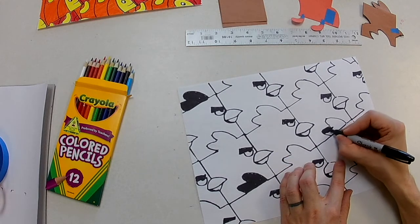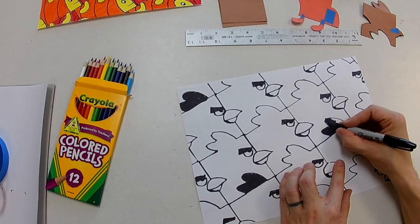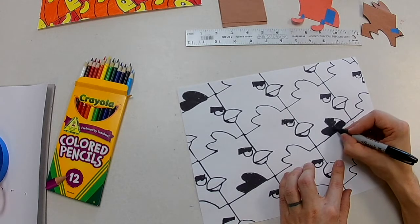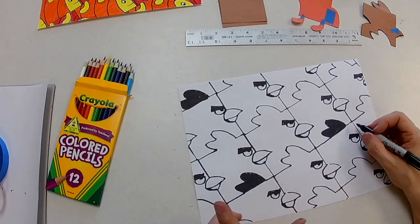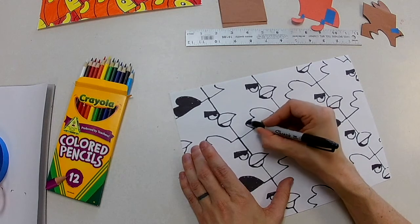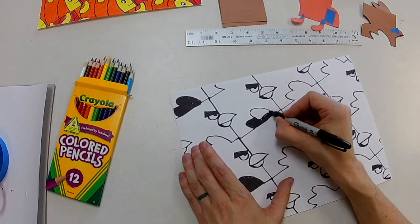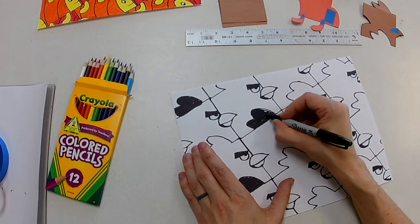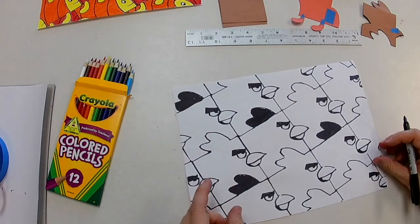Sometimes it pays to use a pencil so if you mess up you can erase. So you could like slightly shade it in with a pencil. I'm using a Sharpie, but I'm double checking. Okay, so white. This one will be black.